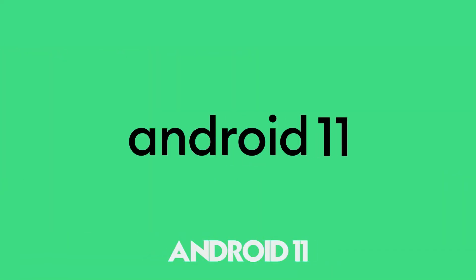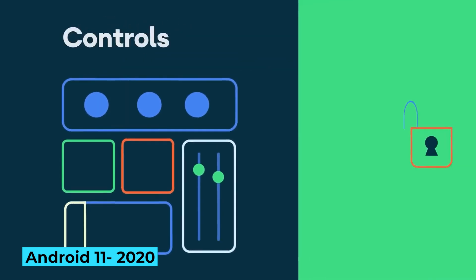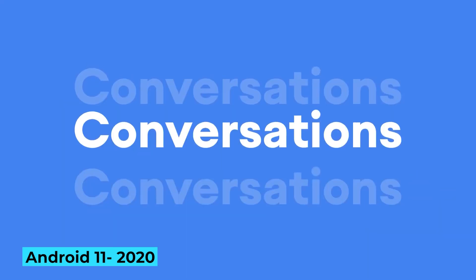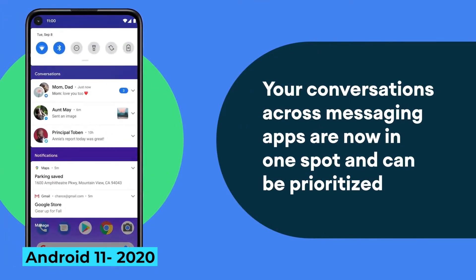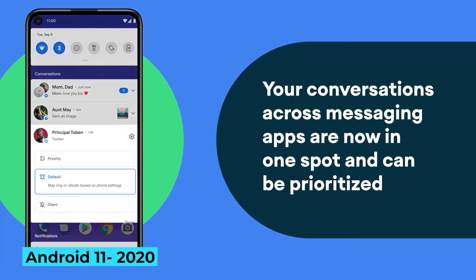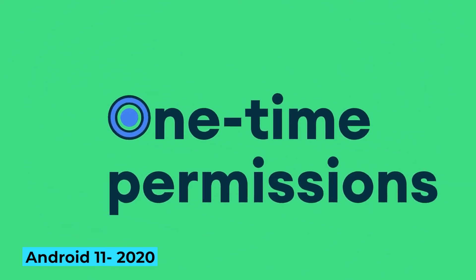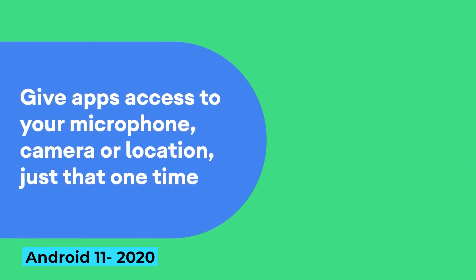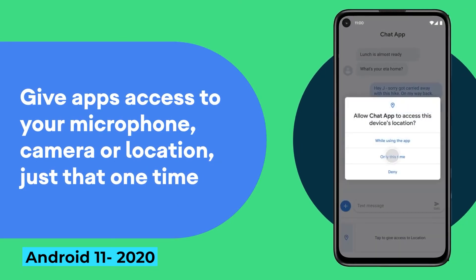Android 11, 2020: Android 11 was released in 2020 and added smart device support. The update added message notifications with the ability to screen them without opening the app. Users could also set app permissions to be requested every time the app is used, preventing indefinite data access. Permissions for apps unused for months were also automatically revoked.